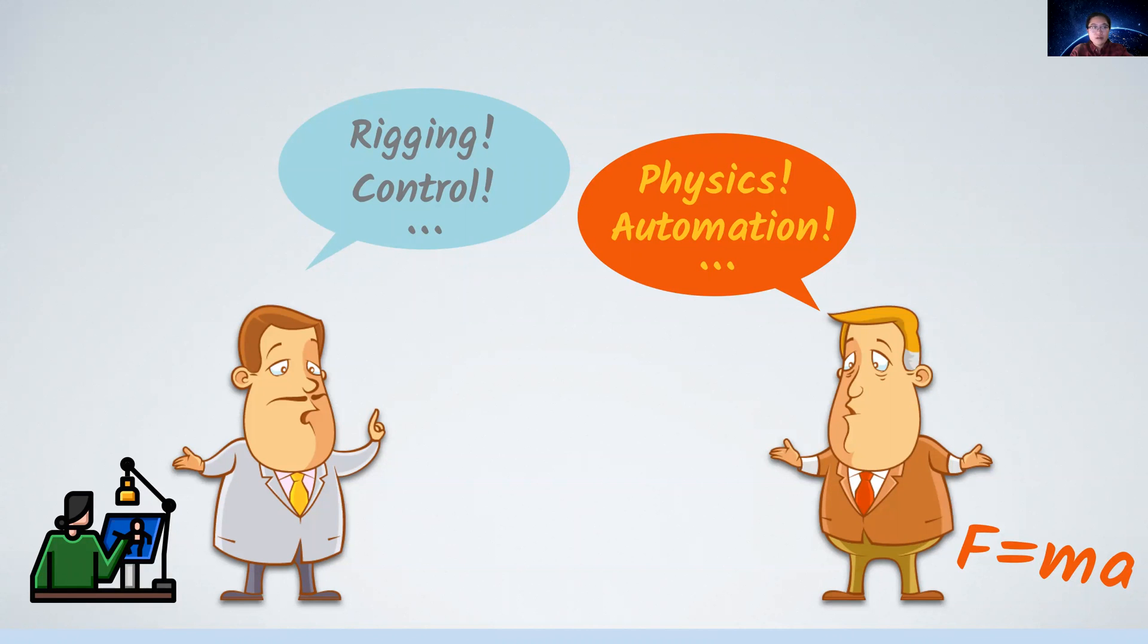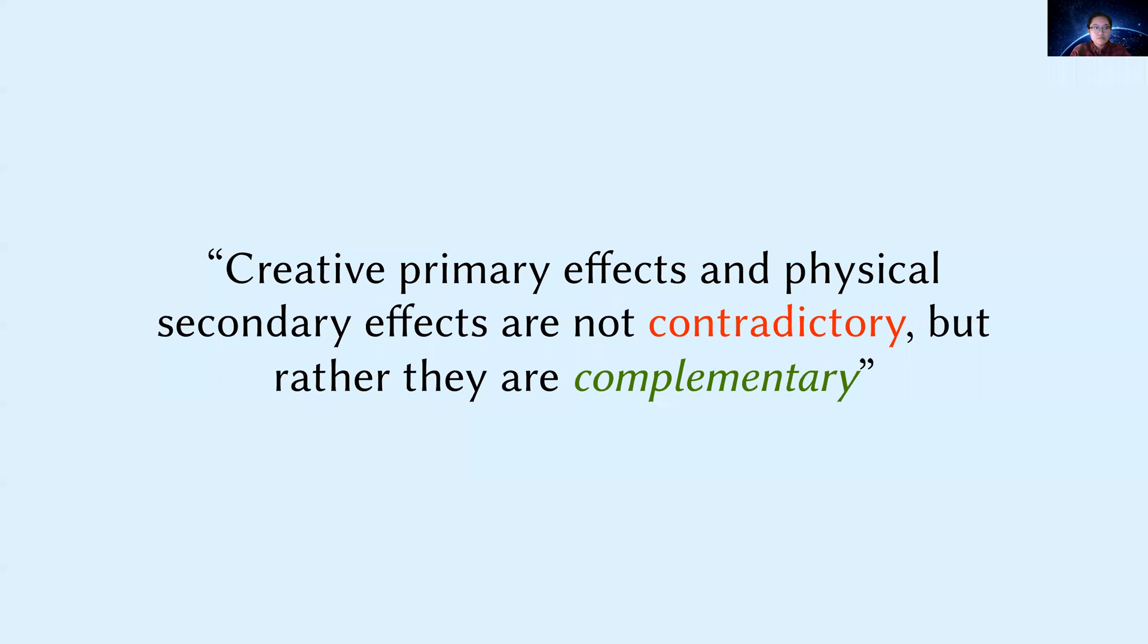Up to here, a paradox seems to appear. The artist's rig displacement can be treated as hard constraints, otherwise physics has no room for secondary effects. Meanwhile, physics cannot have too much freedom so as to undo the artist's work. Instead, we advocate that creative primary effects and the physical secondary effects are not contradictory, but rather they are complementary.